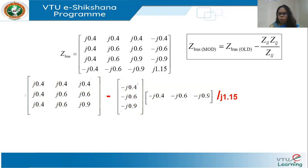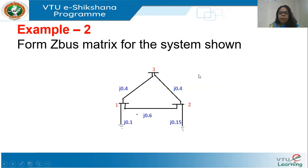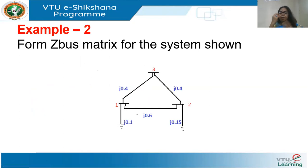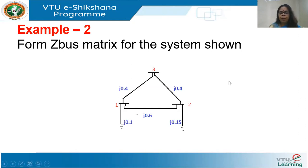I hope it is clear how to build the Z-bus. Let me illustrate with one more example. Here the external nodes are 1, 2, and 3, and the ground is node 0 — the reference. There are two elements between the ground and the buses (bus 1 and bus 2). In a practical case, you start by taking an element between the ground and any bus, then build the Z-bus algorithm from there.